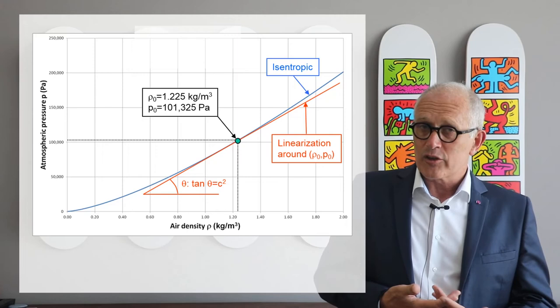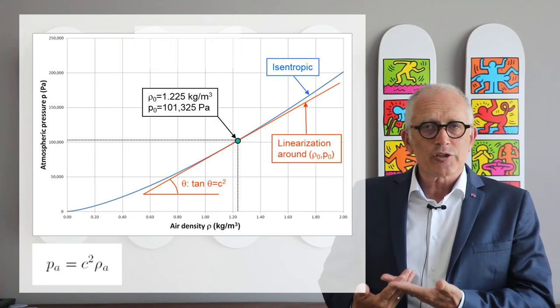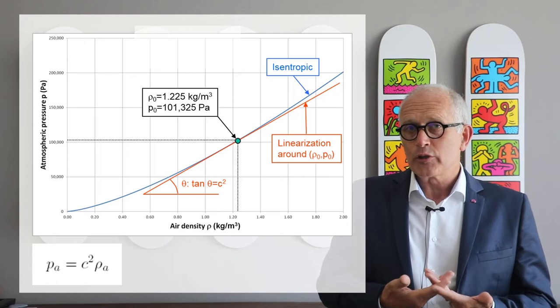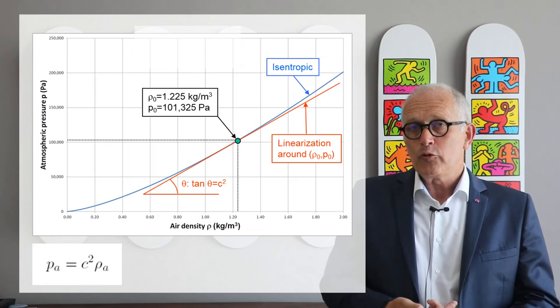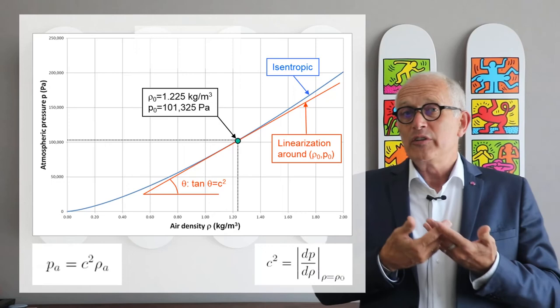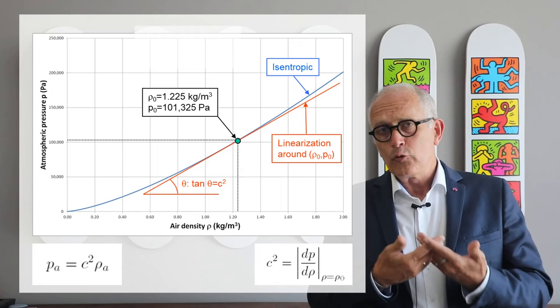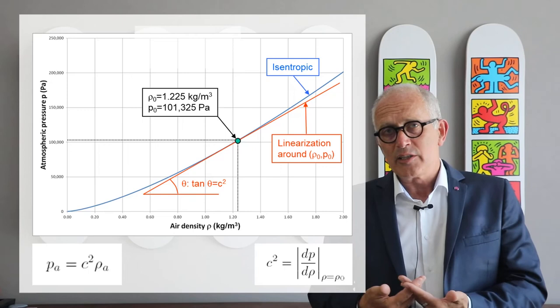And if we do that linearization, we end up with something quite interesting. It is that the pressure fluctuation and the density fluctuation are proportional to one another. And the proportionality factor is called c squared. It's a constant, it's a positive constant, and we will see later that this c is nothing but the speed at which the sound waves are propagating. So it's actually a definition of the speed of sound. The speed of sound is the square root of the slope of the pressure to density relationship at the atmospheric conditions.